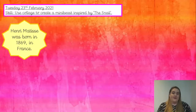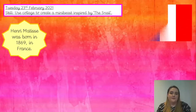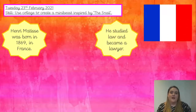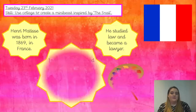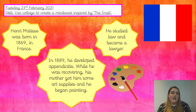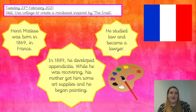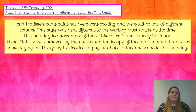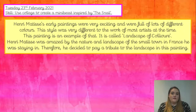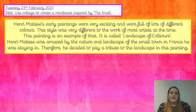Let's learn more about our artist. Henri Matisse was born in 1869 in France. He studied law and became a lawyer. However, in 1889 he developed appendicitis and became really poorly. While he was recovering, his mother bought him some art supplies and he began painting. His early paintings were very exciting and full of lots of different colours, which was very different to the work of most artists at the time.